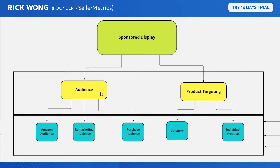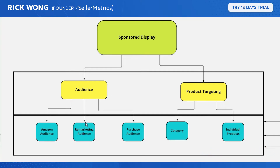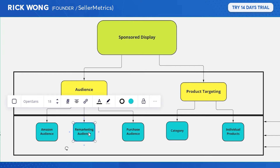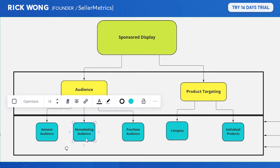Audience targeting is very similar to how you would do ads on Facebook. There are three types: remarketing, Amazon audience, and purchase audience. Remarketing covers people that visited your listing but haven't made a purchase — really useful if you're selling a high AOV product requiring multiple touchpoints, or a product users constantly repurchase where lifetime value is high.